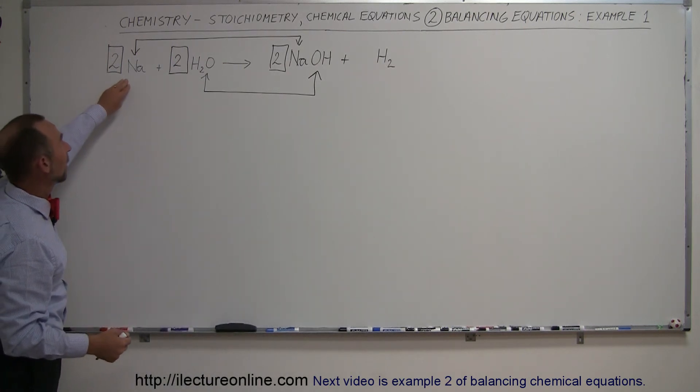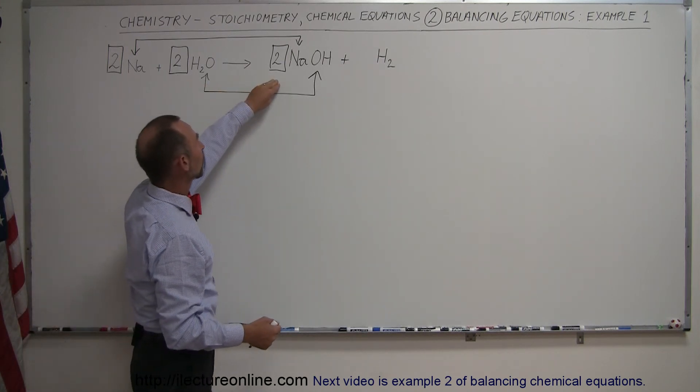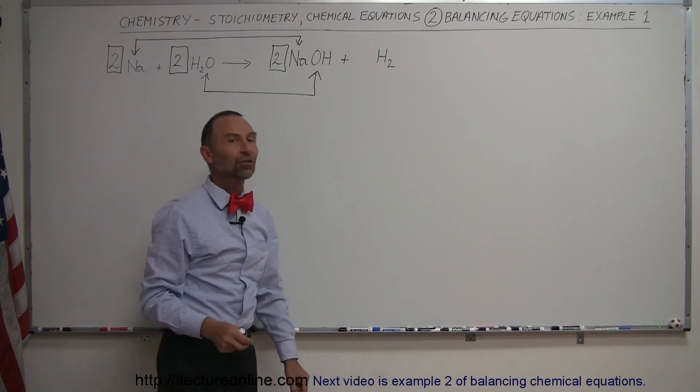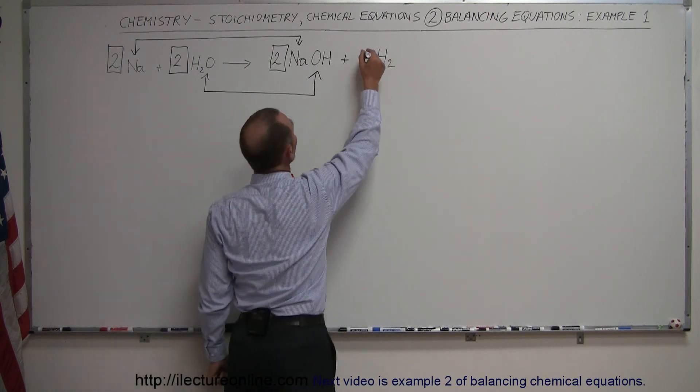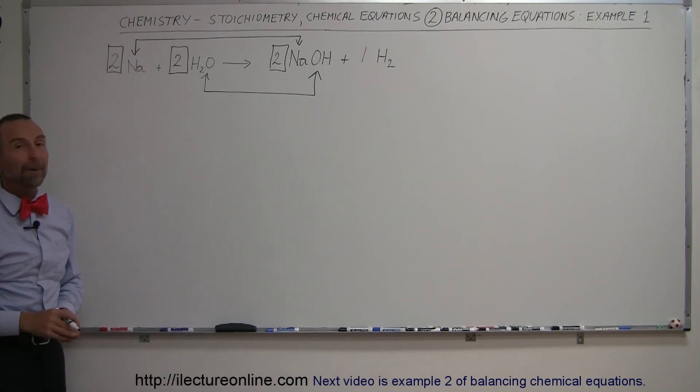So 2 sodium, 2 moles of sodium plus 2 moles of water form 2 moles of sodium hydroxide and 1 mole of hydrogen gas. You can put one there if you like, doesn't matter. But now it's complete. That is the balanced equation.